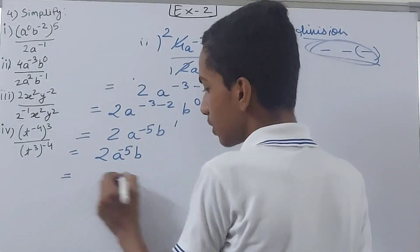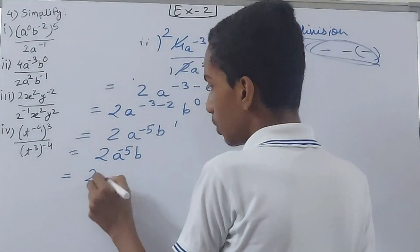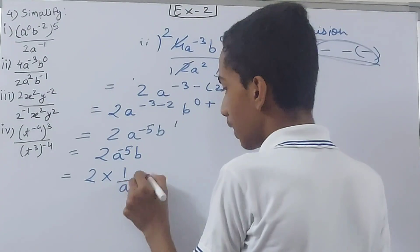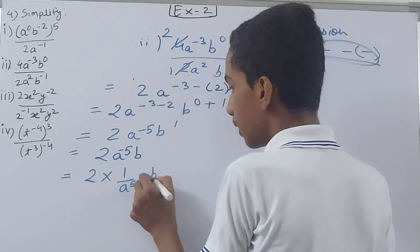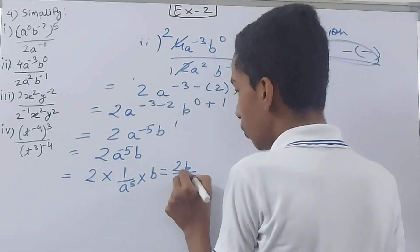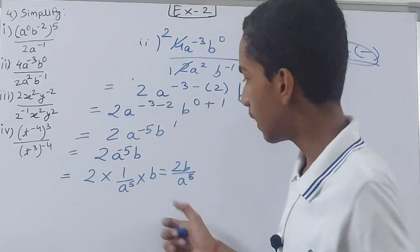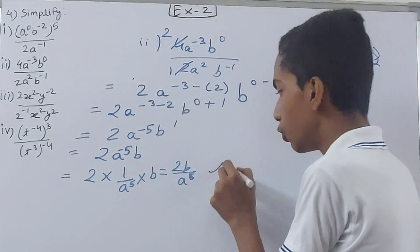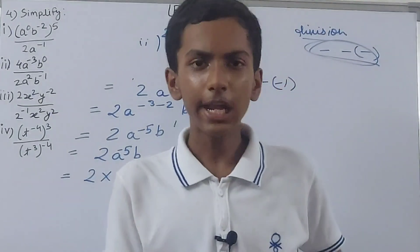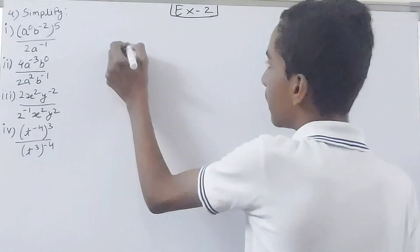So the result is 2a to the power minus 5 upon b. Converting: 2 into 1 by a⁵ into b, which gives 2b upon a to the power 5. That is our answer for the second part. Let's move on to the third part.